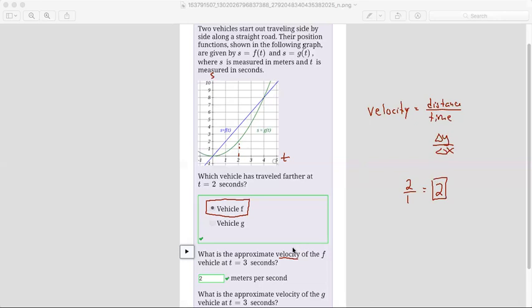So the velocity of the f vehicle is a constant two meters per second the whole time, and it's that at three seconds and everywhere else. So that's where this answer comes from.